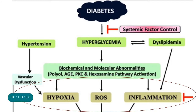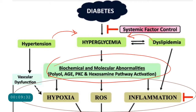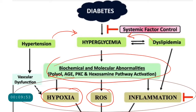In diabetes, hyperglycemia — worsened by co-existing hypertension or dyslipidemia — leads to various biochemical and molecular abnormalities: the polyol pathway, advanced glycation end products, protein kinase C activation, and the hexosamine pathway. Because of these, there is hypoxia, vascular occlusion, vasoconstriction due to decreased nitric oxide synthesis, reactive oxygen species from reduced antioxidant potential, and significant inflammation — all converging on damage within the eye in diabetic retinopathy.